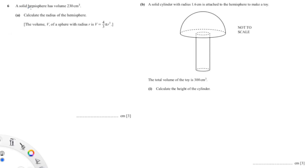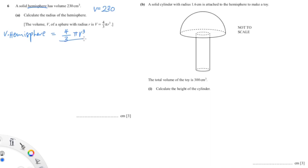In this question they're talking about a hemisphere and they've given us the formula for finding the volume of a sphere. The volume of this hemisphere equals 230 centimeters cubed. The formula for the volume of a hemisphere equals 4 over 3 pi r cubed, divided by 2, because a hemisphere is half of a sphere.